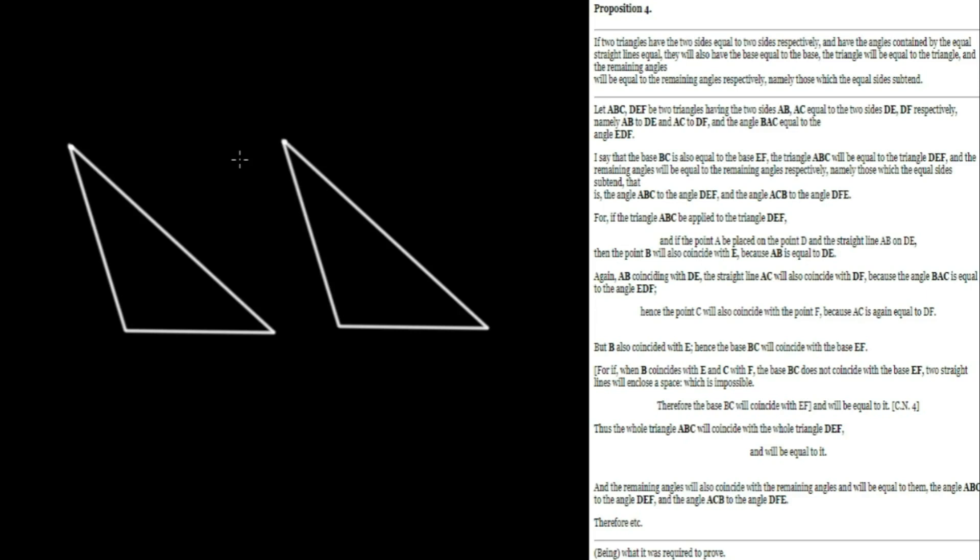Let's continue with proposition number four. So what are we trying to do here? Let ABC and DEF be two triangles. So let me label those. So ABC and DEF. Those are going to be our two triangles.